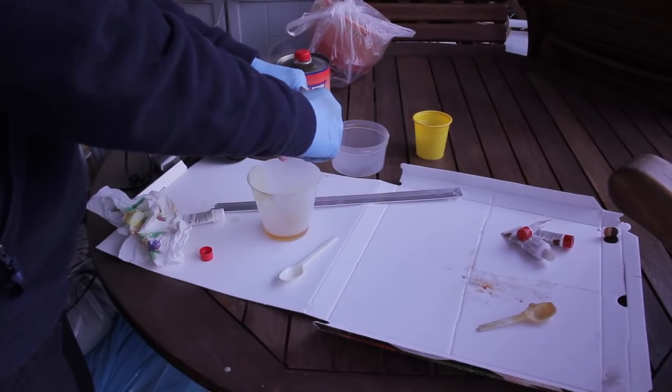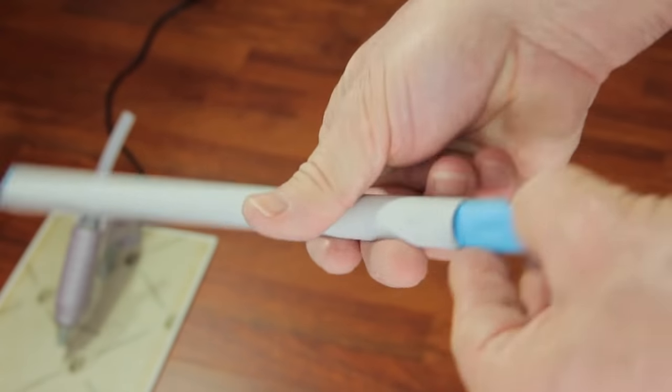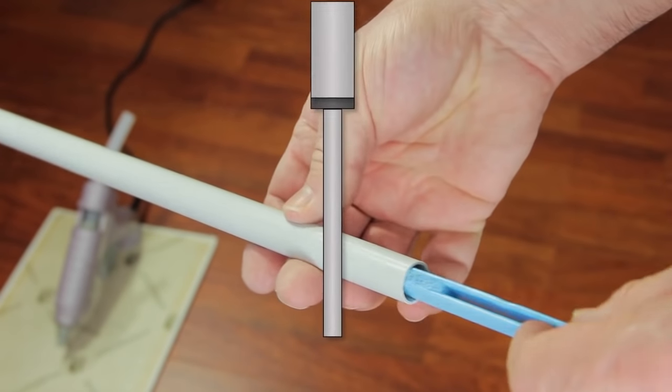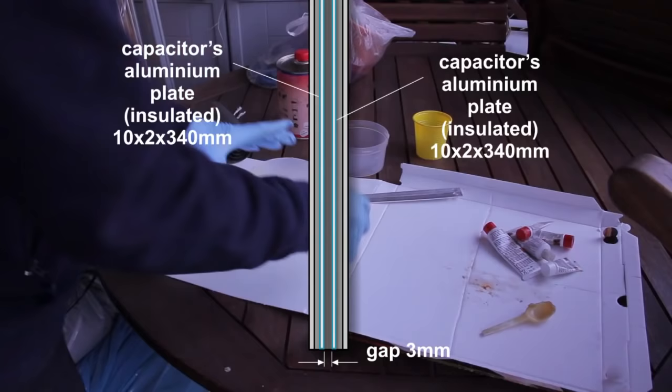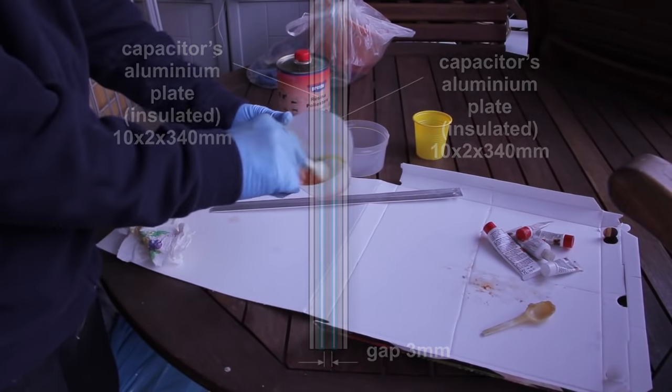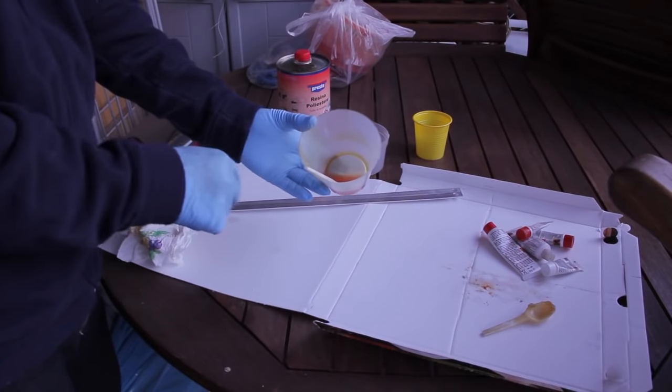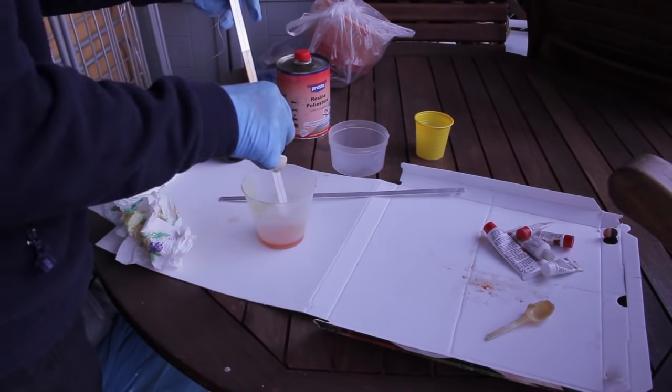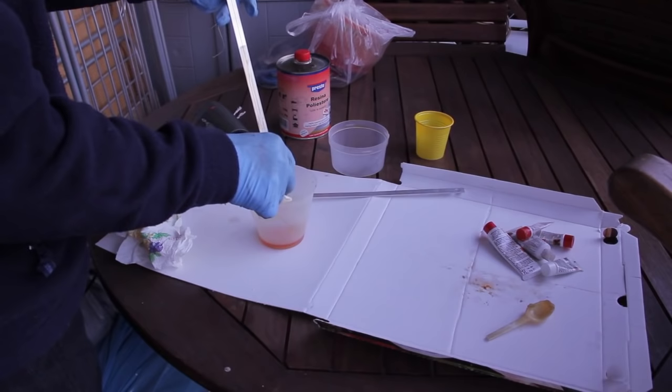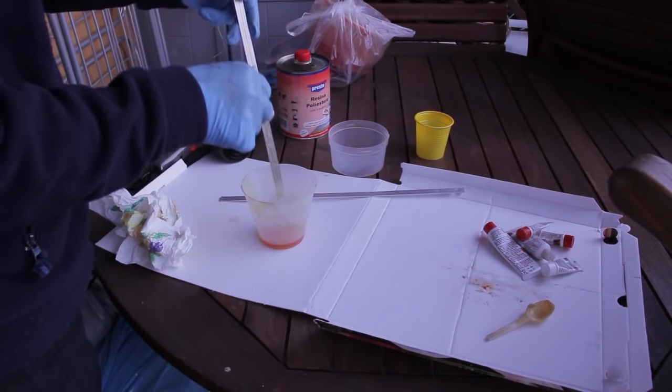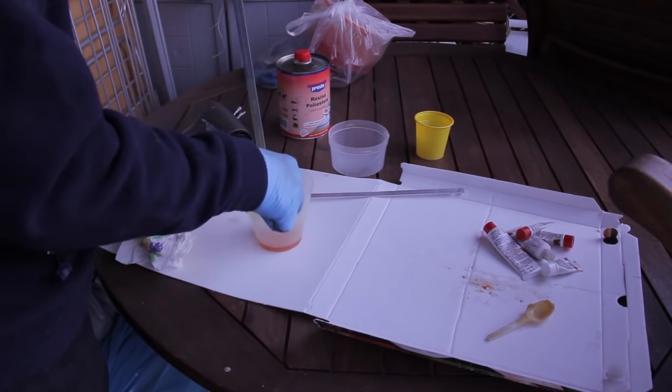I've used two strips of aluminum to form the plates of a capacitor that will be located into a plastic pipe. Because the strips don't have to enter in contact with the fluid, which may be conductive, such as in the case of water, I have covered the strips with a layer of bicomponent polyester resin.